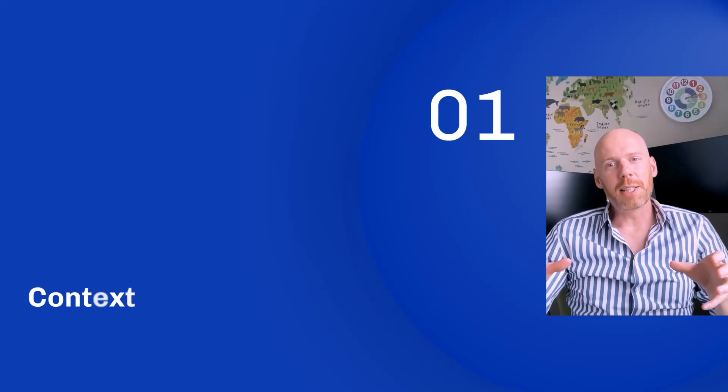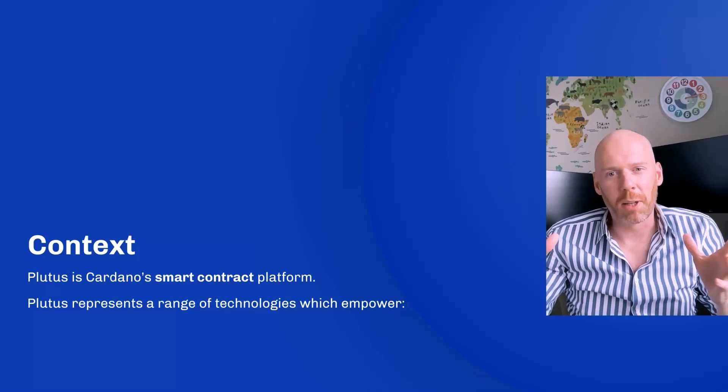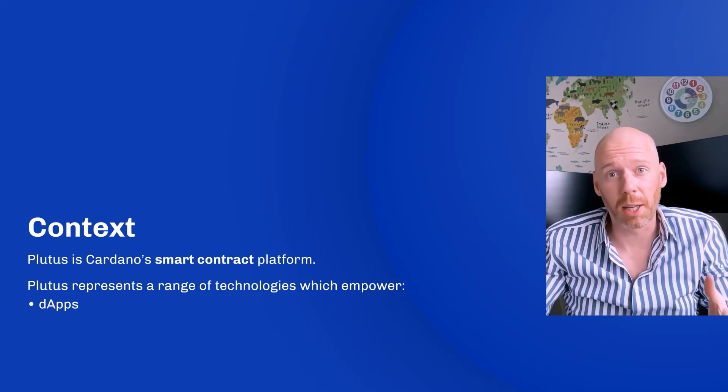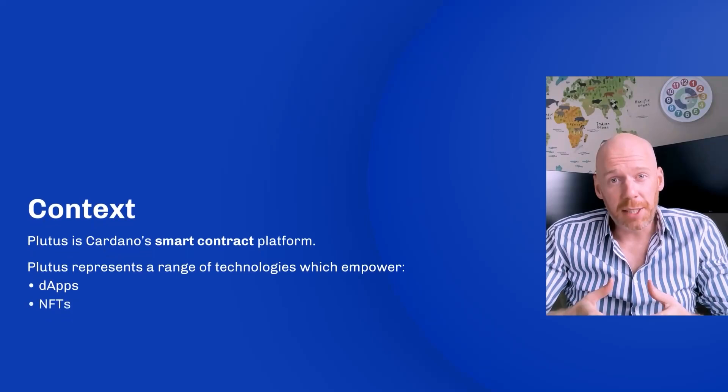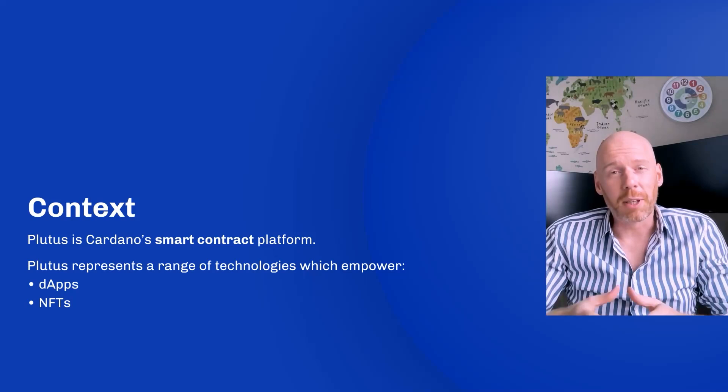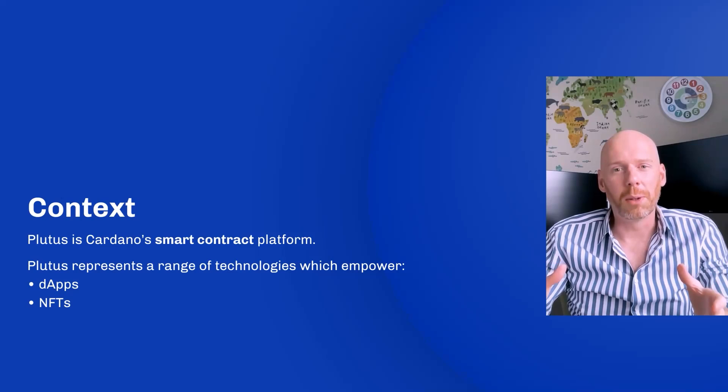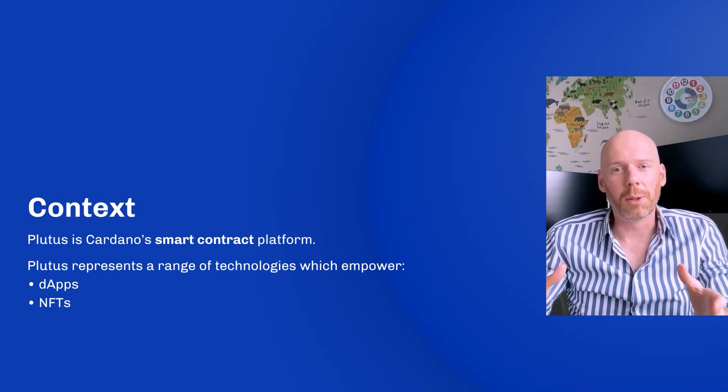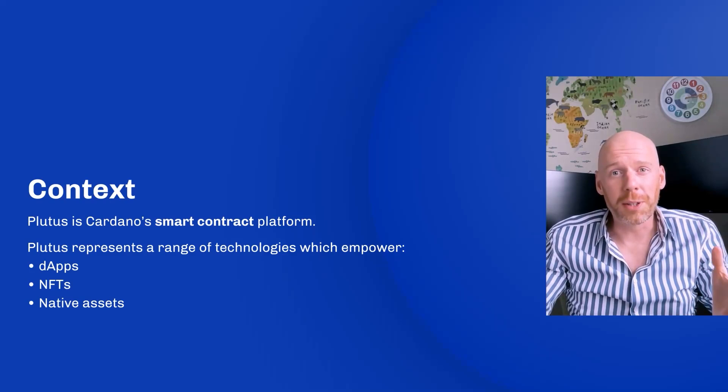Plutus is Cardano's smart contract platform, and Plutus represents a range of technologies, but ultimately they empower the creation of dApps or decentralized apps — apps on blockchain. They also enable NFTs, non-fungible tokens, which have been very popular this year. They open up the door for a whole new range of collectibles and use cases. Plutus is also how you launch native assets on Cardano — your own coin, your own token, your own currency. Plutus is the gateway to launch anything you'd like in that context.